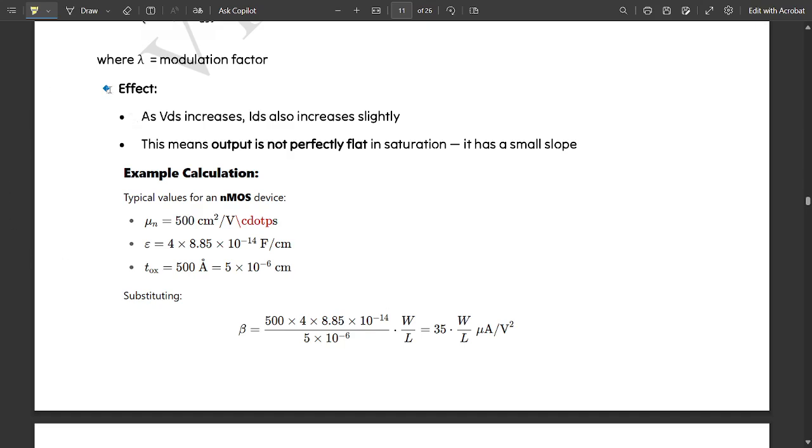Now with respect to the formulas which I have discussed right now, let us see one simple numerical example. As VDS increases, IDS also increases slightly. That one thing which I have seen here.